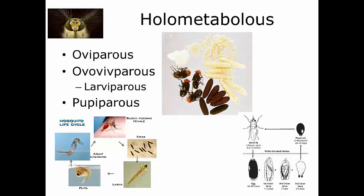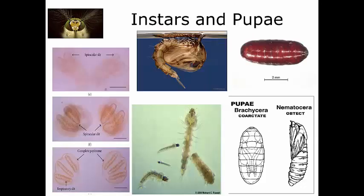Many Dipteran species inhabit aquatic or semi-aquatic environments during their immature stages. Eggs or larvae are found underwater or near moist environments — laid on the surface of water, on stream banks, in puddles, in decomposing vegetable or animal matter, in sewers, drains, or fecal matter. The number of larval instars varies with species, but in general Diptera have three or four larval instars before pupation.